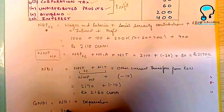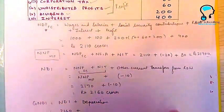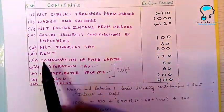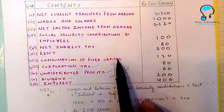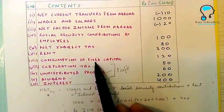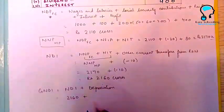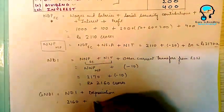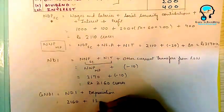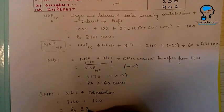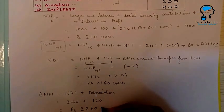Gross national disposable income = 2160 crores plus depreciation. Depreciation is the consumption of fixed capital, which is 120 crores. So 2160 + 120 = rupees 2280 crores.